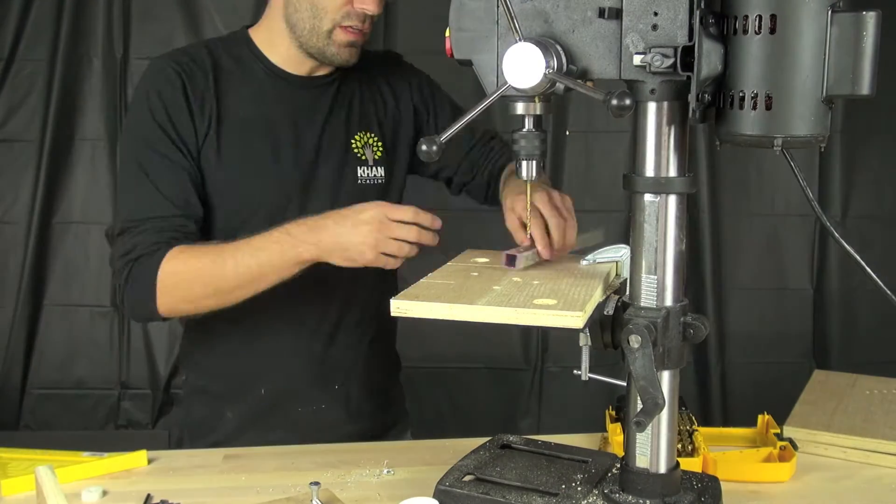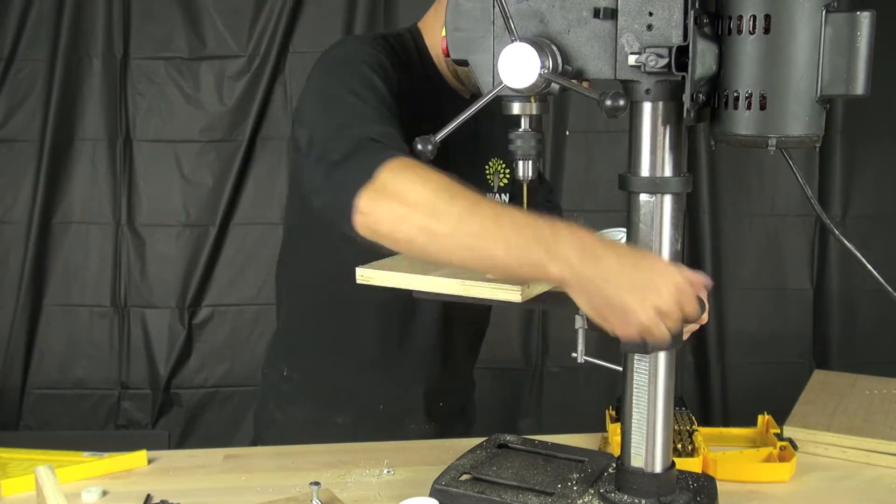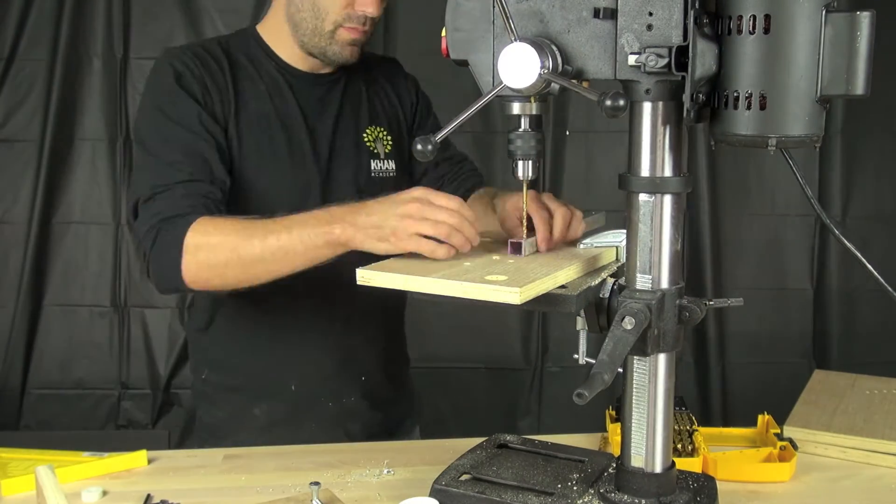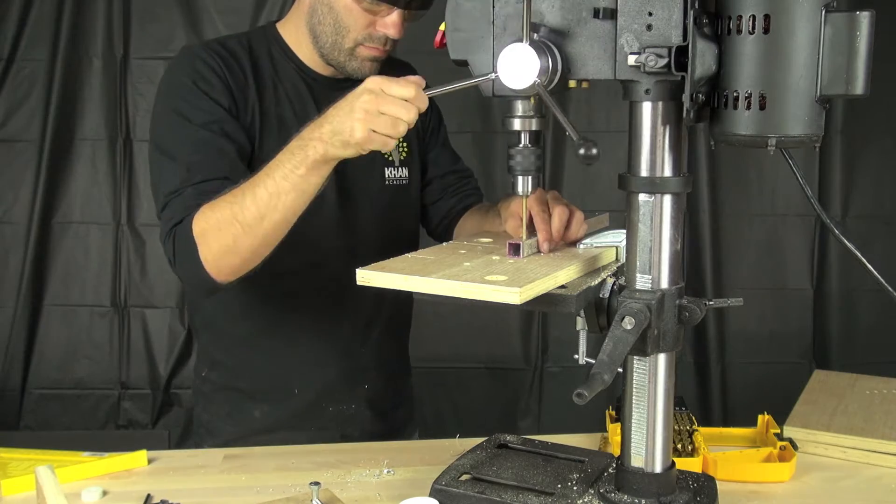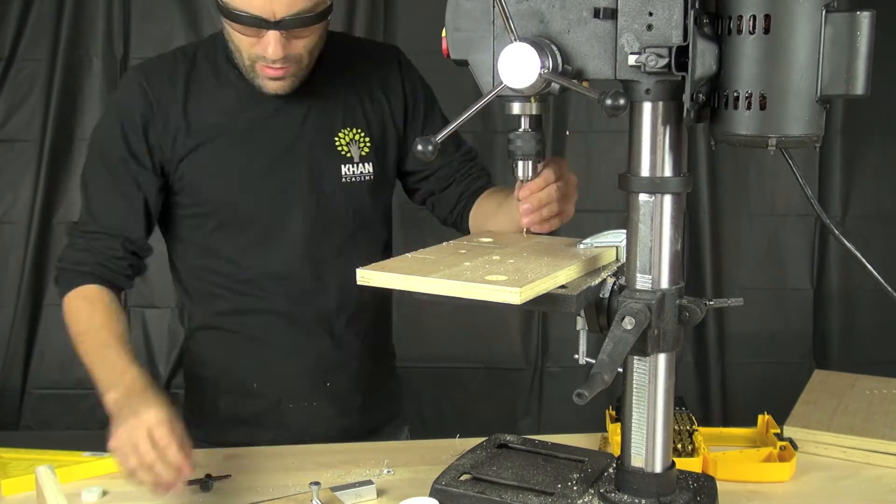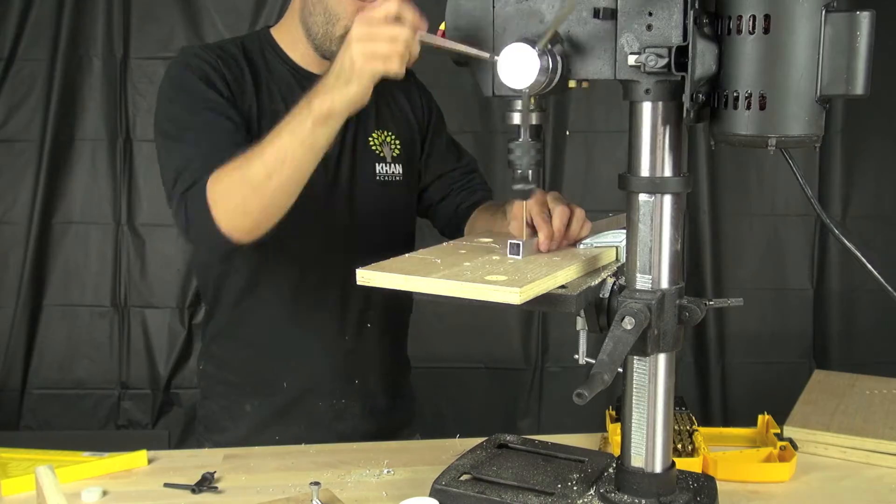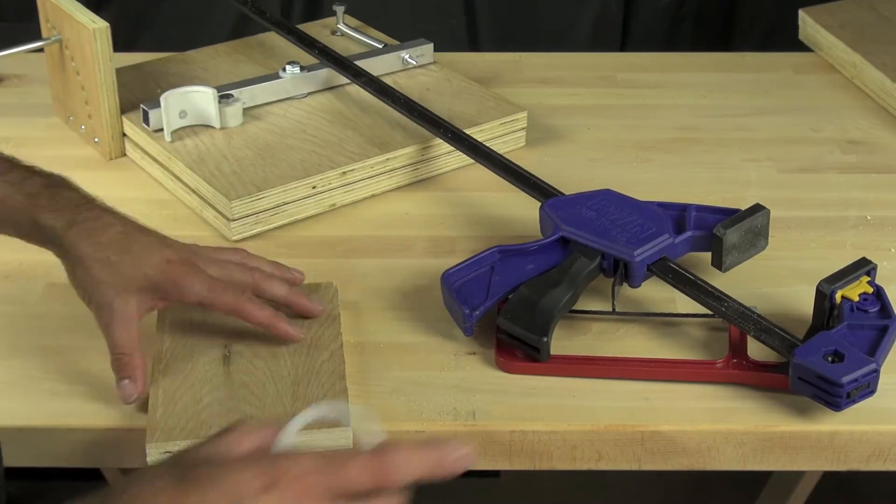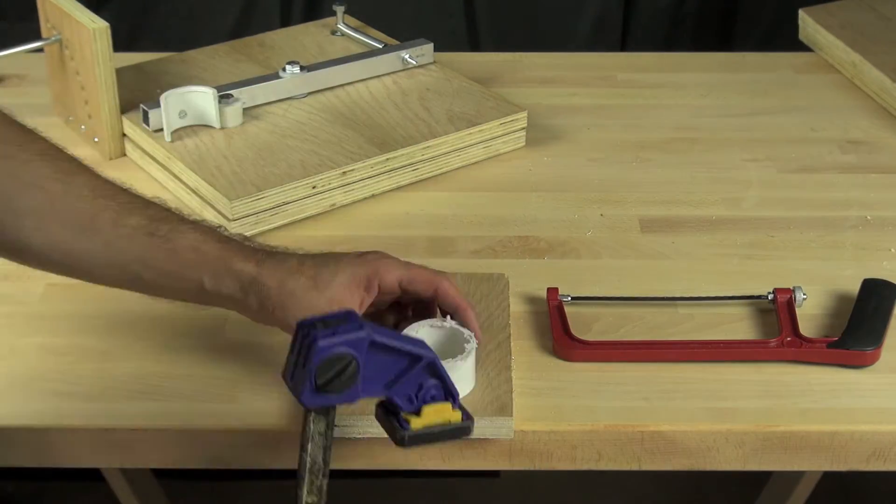So once we've done that we're going to take our larger drill bit. And I believe that is a 11 64th inch bit. And we're also going to use, I think it's a 7 32nds bit for the eye screw. And so we made those holes. And now we're going to cut our cradle out.